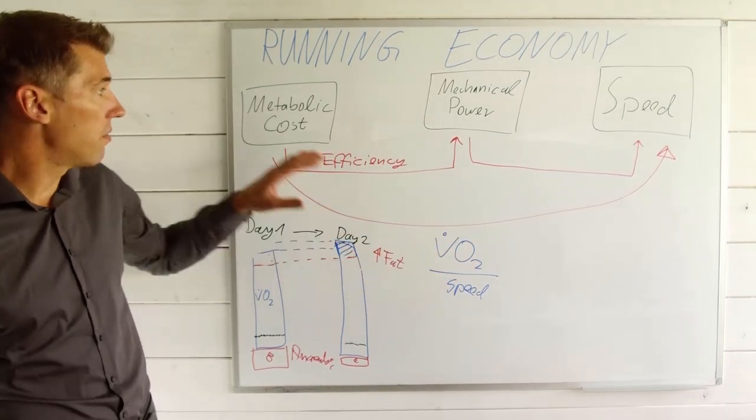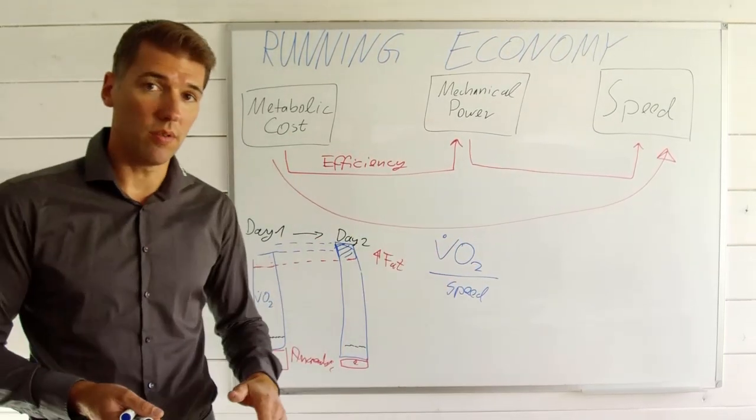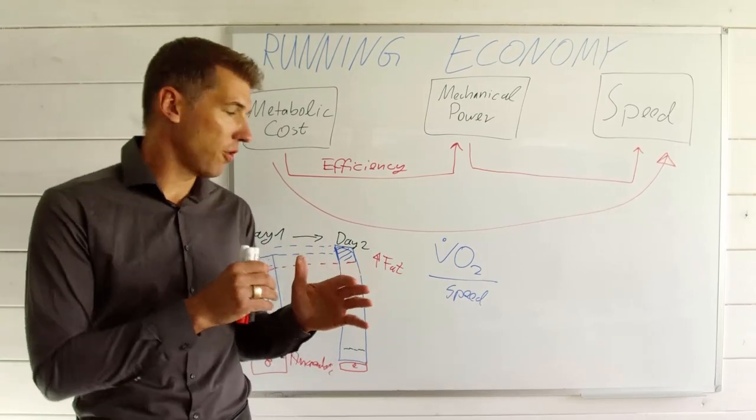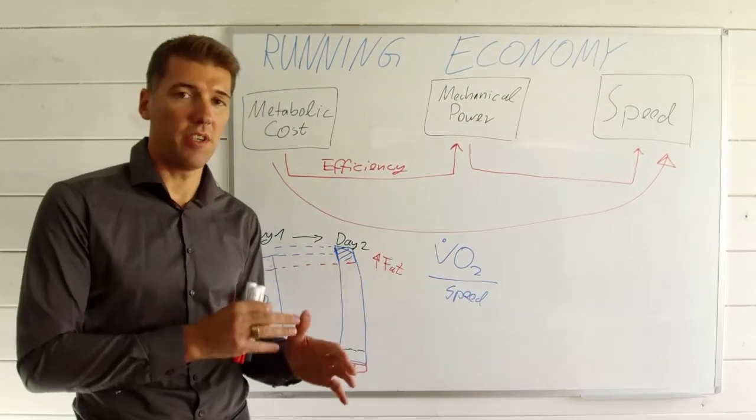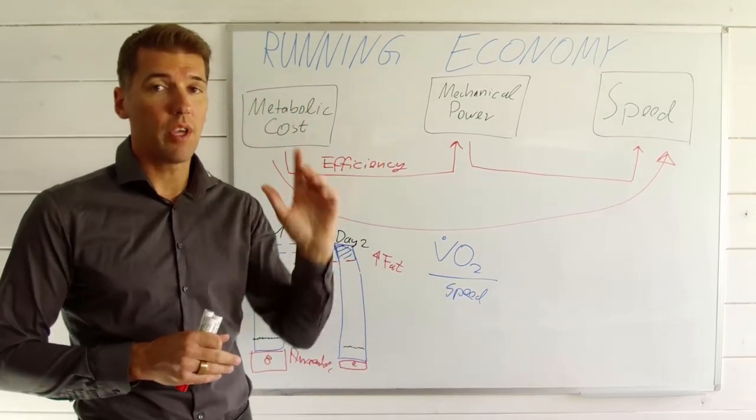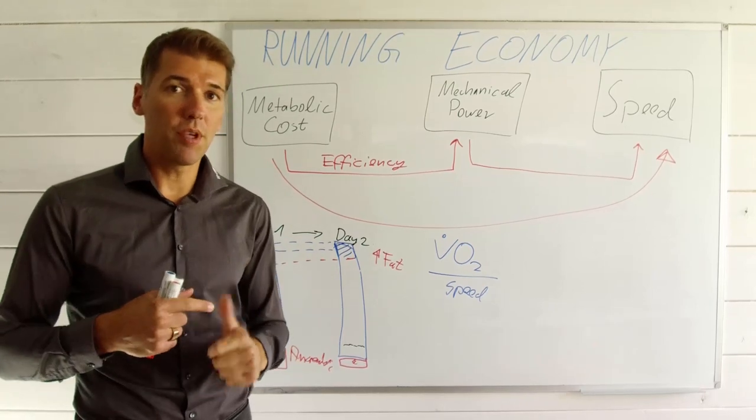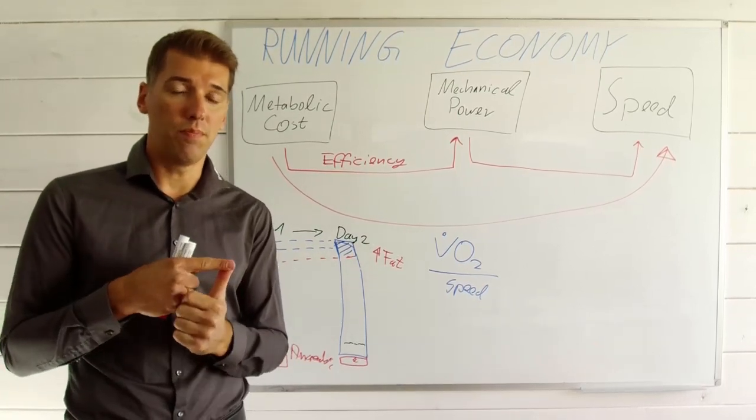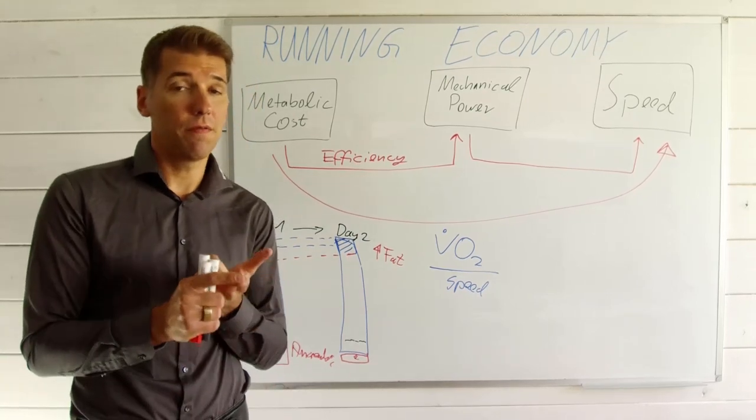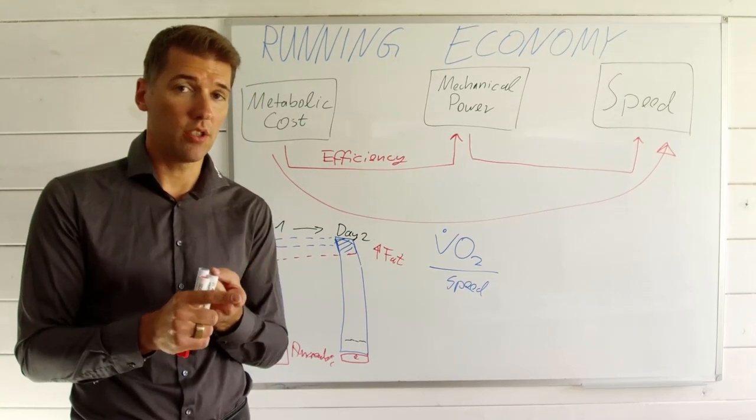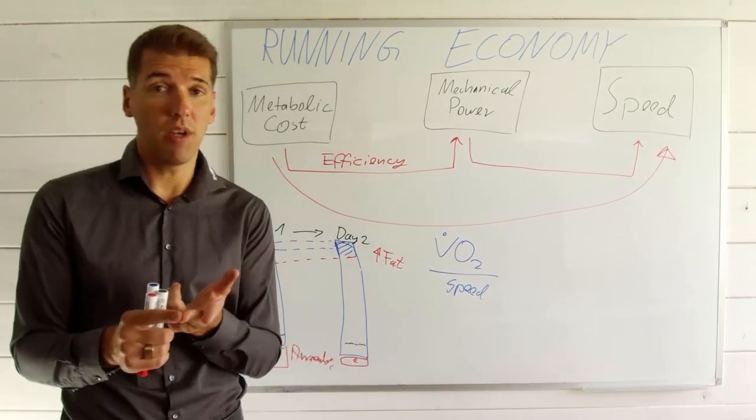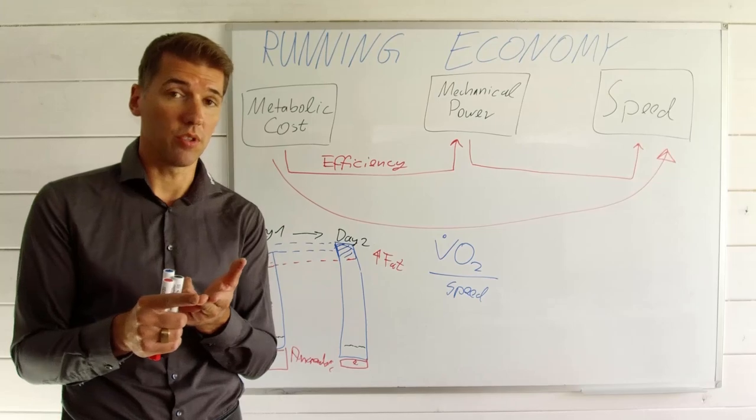So, shortcoming here is metabolic cost is not VO2. So long story short, if you survived this nerdy stuff here, the takeaway message is running economy, when you get it measured, make sure people normalize it for base metabolic rate, make sure people normalize it for fatty acid combustion, so only look at the VO2 that goes into muscle contraction, and people normalize it for anaerobic energy contribution.